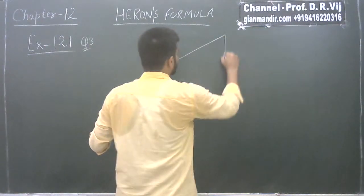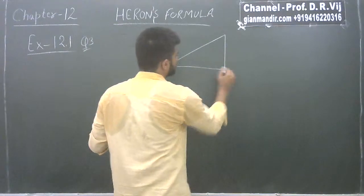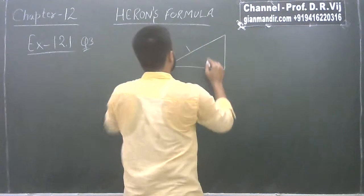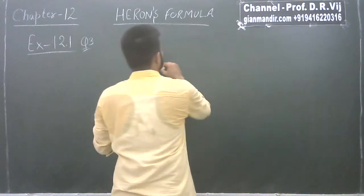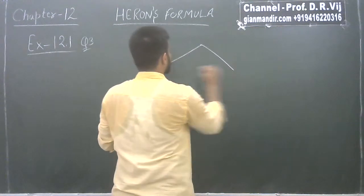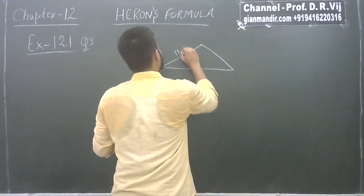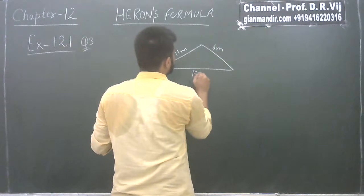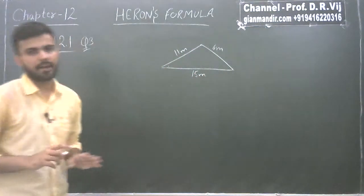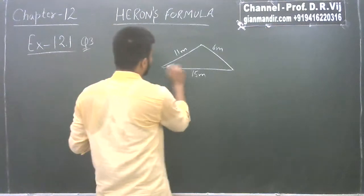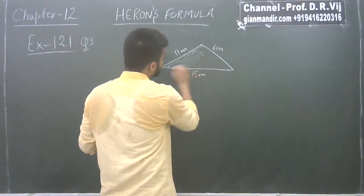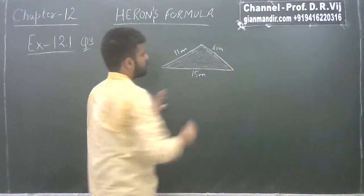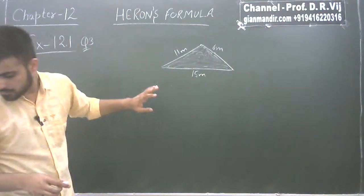This is the figure — this side is 11 meter, this is 6 meter, and this is 15 meter given to us. We simply have to find this area — the area of the triangle which is painted in color. There is a slogan written here: 'Keep the park green and clean.'